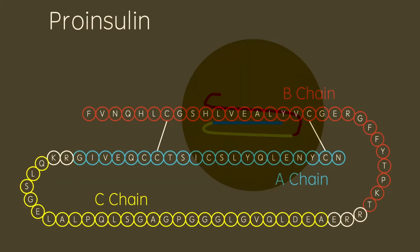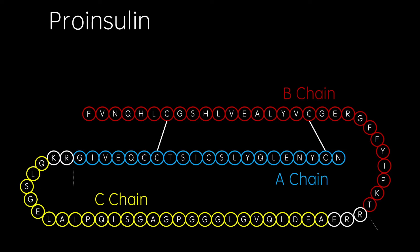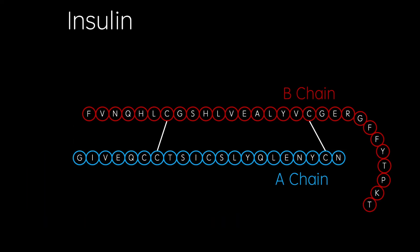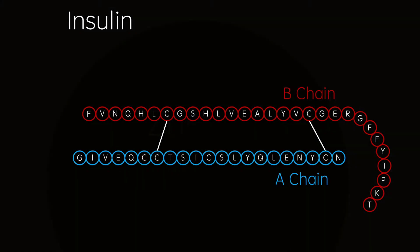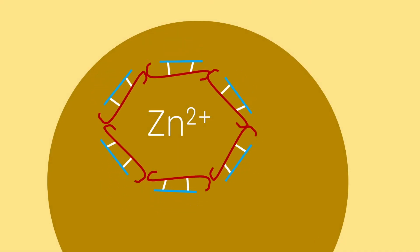These vesicles contain various endopeptidase enzymes, which cleave away the C chain, producing mature insulin. The histidine molecules in the B chain then interact with zinc molecules, with six insulin molecules per zinc ion, forming hexamer crystals. Insulin is now ready to be secreted.